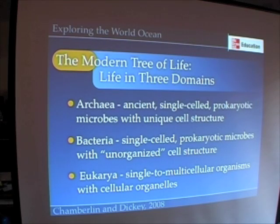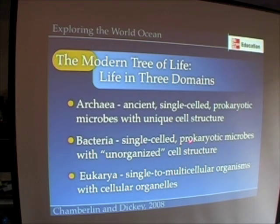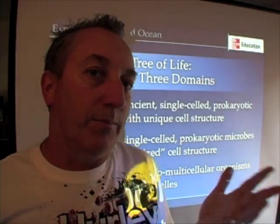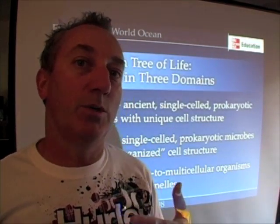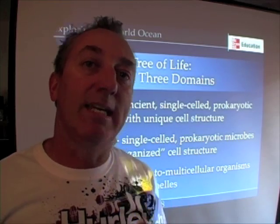In the modern tree of life, I mentioned that we would come back to this idea of domains because an emerging, popular classification system, instead of kingdoms, is to divide life into three major groups. These three major groups are called the archaea, the ancient microbes; the bacteria, who are also old but have a different kind of cell structure than the archaea; and the eukarya, which are the more modern organisms — modern being about one and a half billion years old, as opposed to the three and a half billion years thought to be the age of the first life of the archaea and the bacteria.